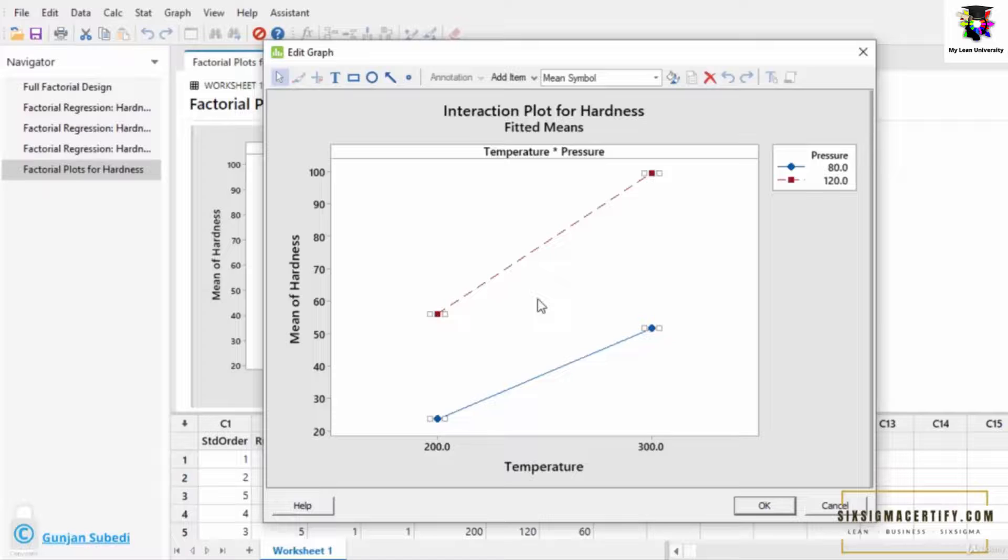But the interaction is not so significant. If these lines cross each other, then we say that there is some interaction and the interaction is significant.